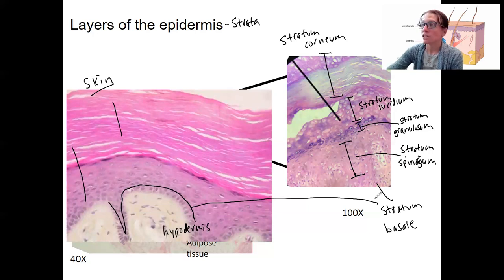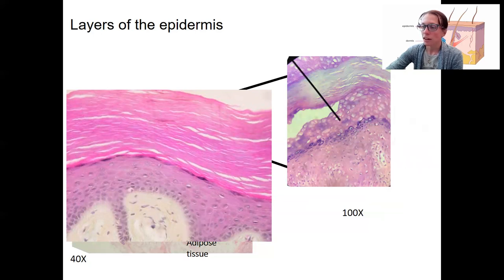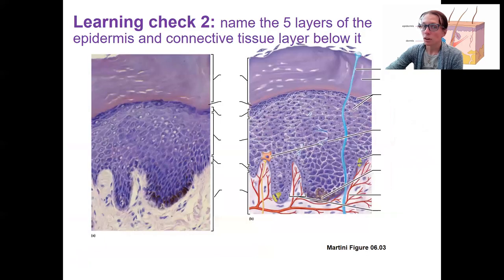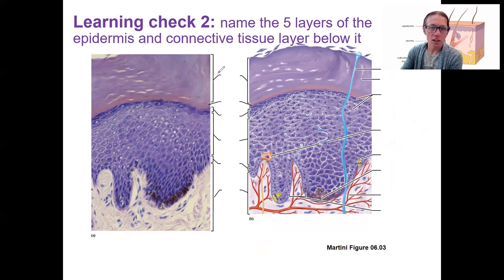Again, you'll see it in lab, and we'll look at the function of the layers in the next video on growth. Let's do a learning check — I want you to practice. This is a different image, should be easier, especially since I have these indicated here, to name the five layers of the epidermis and then the connective tissue below it.